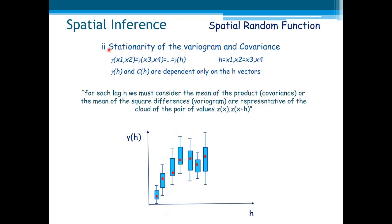Now, the stationarity of the variogram and covariance means that the variogram value does not depend on the location of the samples x_1, x_2, x_3, x_4, but only on the separation vector h. So, in other words, for each h we consider the mean of the product — which is covariance — and the mean of the squared differences — the variogram — which are representative of the cloud of the pair of values for each h. This point is representative of this cloud, and so on — illustrated here as a box plot.